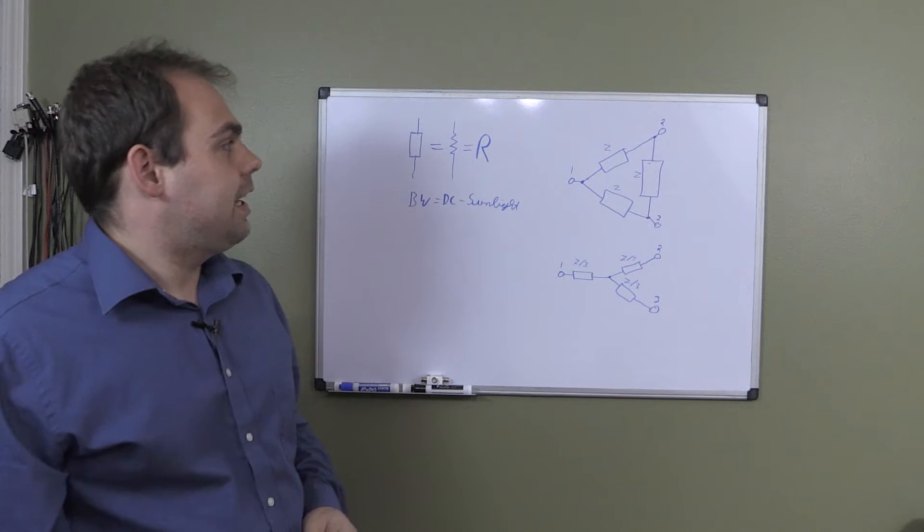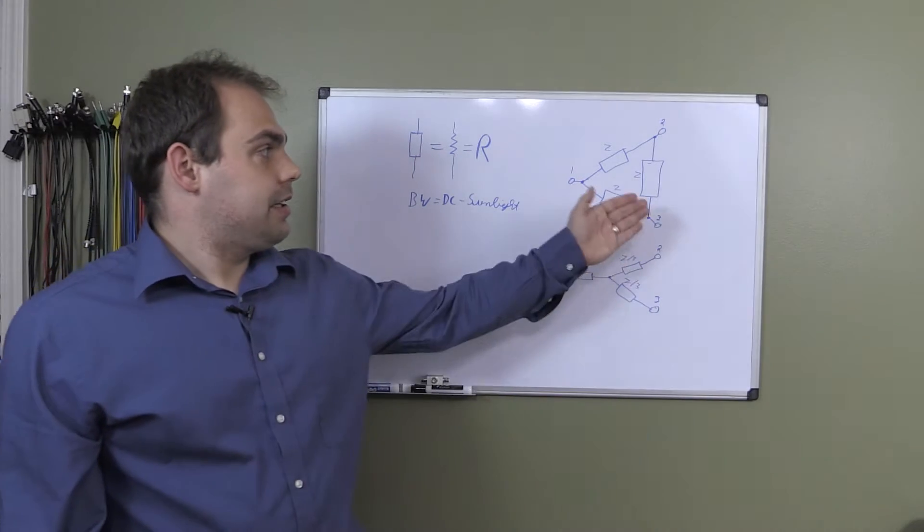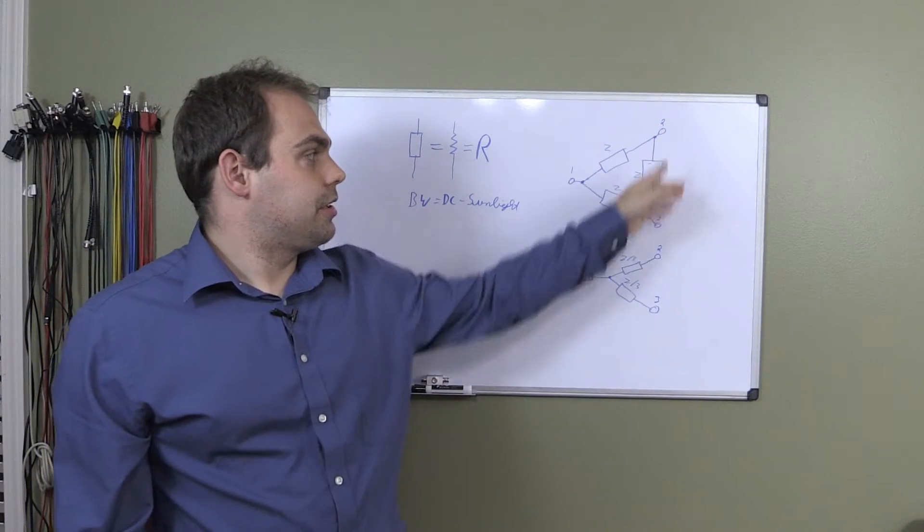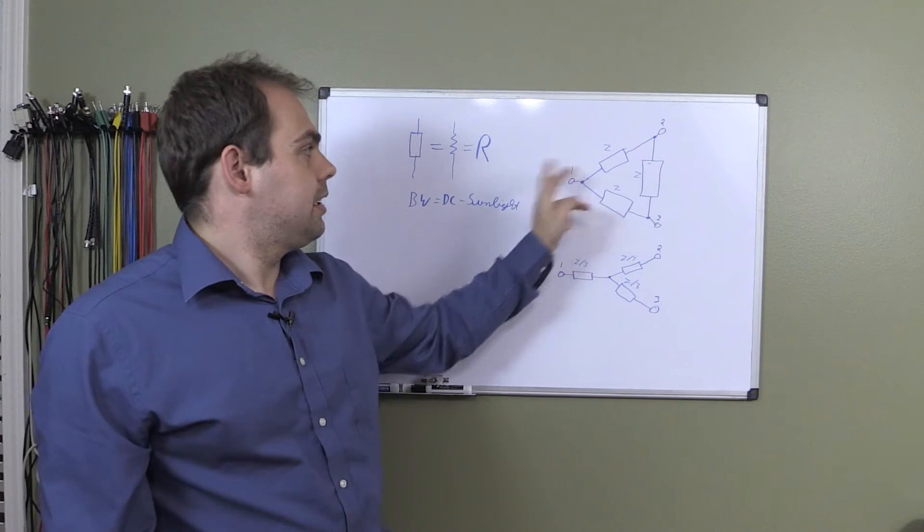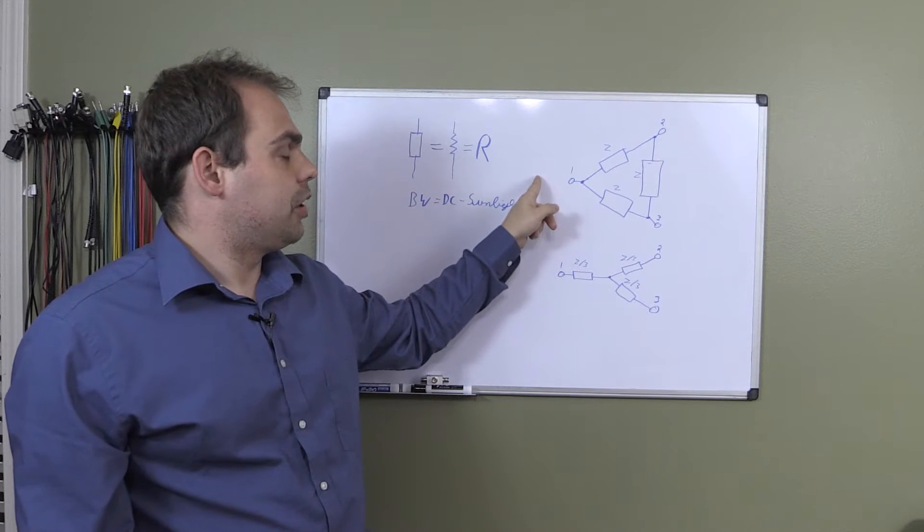That's going to be material for another video. Different and less lossy types of splitters/combiners is going to be a topic for another video. Anyway, like I said, you can use these in reverse. You can combine two signals - just apply them to the output ports and have your combined signal come out of here.